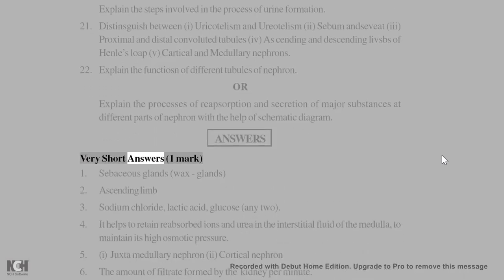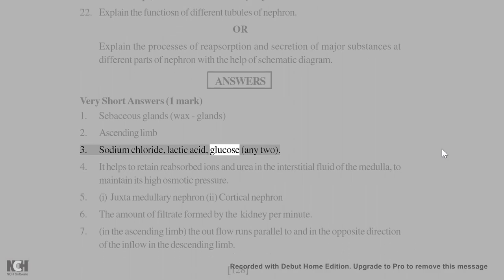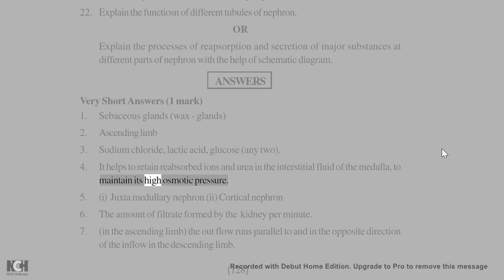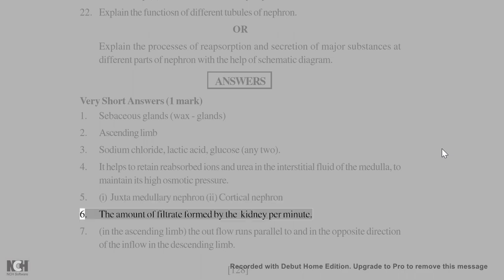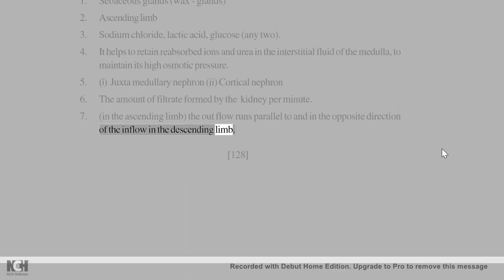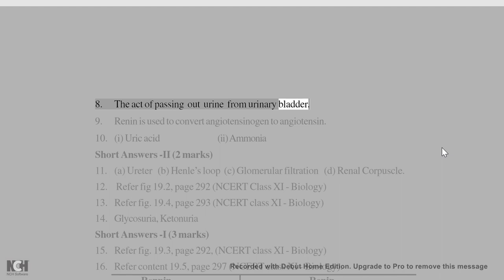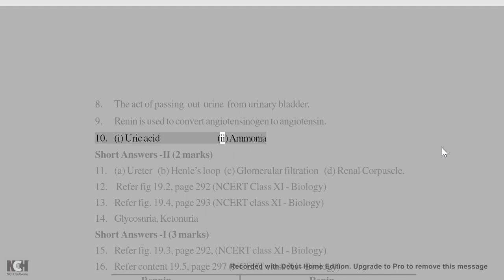Answers — Very short answers (1 mark): 1. Sebaceous glands (wax glands). 2. Ascending limb. 3. Sodium chloride, lactic acid, glucose (any 2). 4. It helps to retain reabsorbed ions and urea in the interstitial fluid of the medulla, to maintain its high osmotic pressure. 5. (i) Juxtamedullary nephron, (ii) cortical nephron. 6. The amount of filtrate formed by the kidney per minute. 7. In the ascending limb, the outflow runs parallel to and in the opposite direction of the inflow in the descending limb. 8. The act of passing out urine from the urinary bladder. 9. Renin is used to convert angiotensinogen to angiotensin. 10. (i) uric acid, (ii) ammonia.